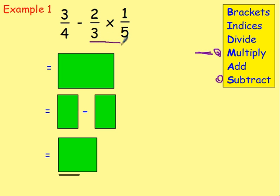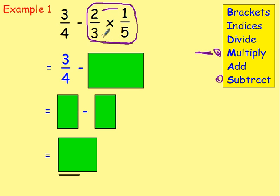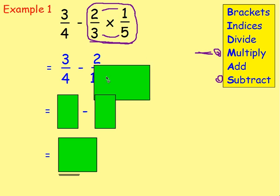We would carry out the multiplication first. The multiplication is two thirds times by one fifth. So we're leaving the three quarters and the subtraction just as they are, and we want to multiply two thirds by one fifth. To multiply fractions, you simplify if possible. Two thirds and one fifth cannot be simplified — the numbers diagonally across can't be divided by the same thing. So we multiply the numerators together: two times one is two. And the denominators: three times five is fifteen. So we get two fifteenths.